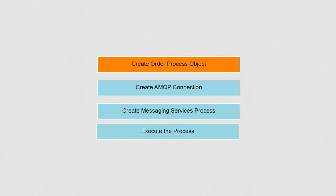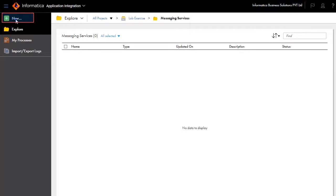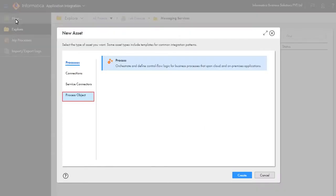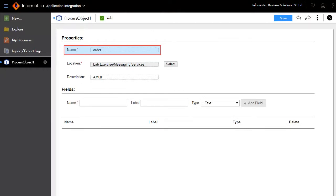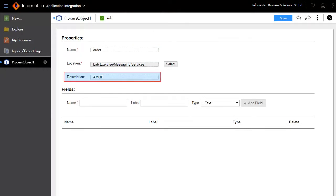In this example, the messages that will be communicated can be simple strings or complex, such as an order or shipping information. To define complex messages as a single object we need to create them as process objects. Let's create an Order process object, as we will be communicating order information. Click New, click Process Object, and click Create.